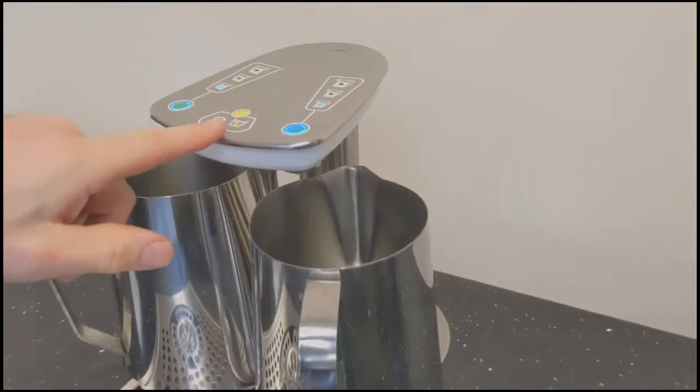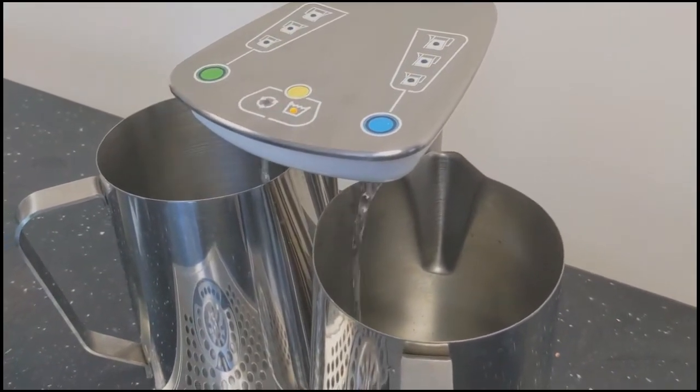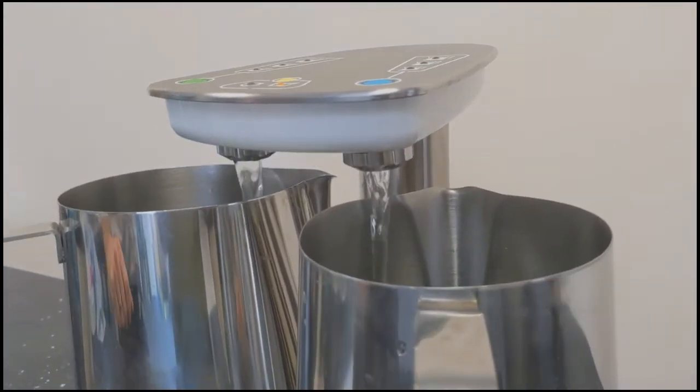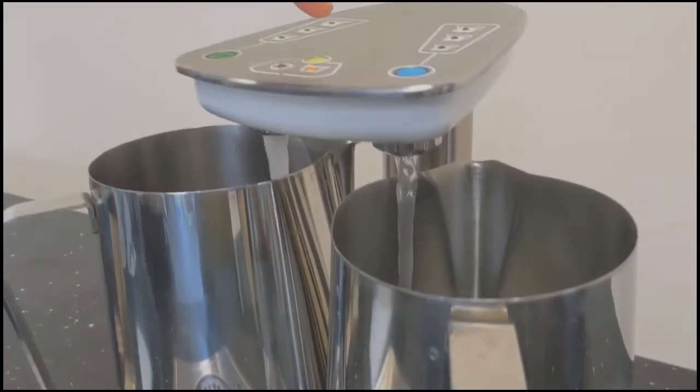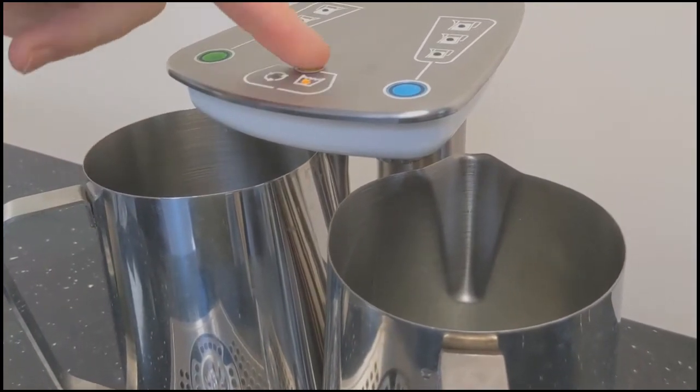Now it's time to activate the rinse cycle by pressing the yellow button once more. This will take two minutes to rinse the whole system. You can pause the rinse cycle at any point by pressing the button and then pressing it once more to restart it.